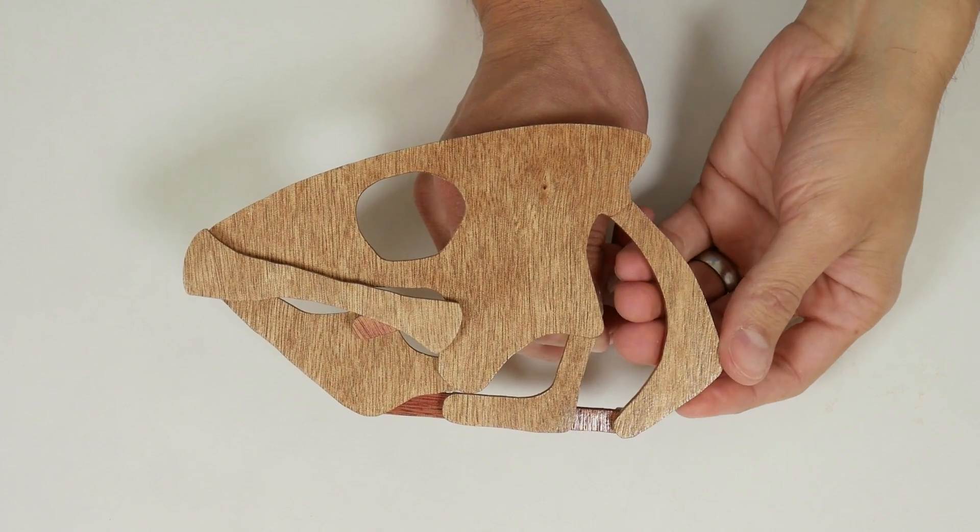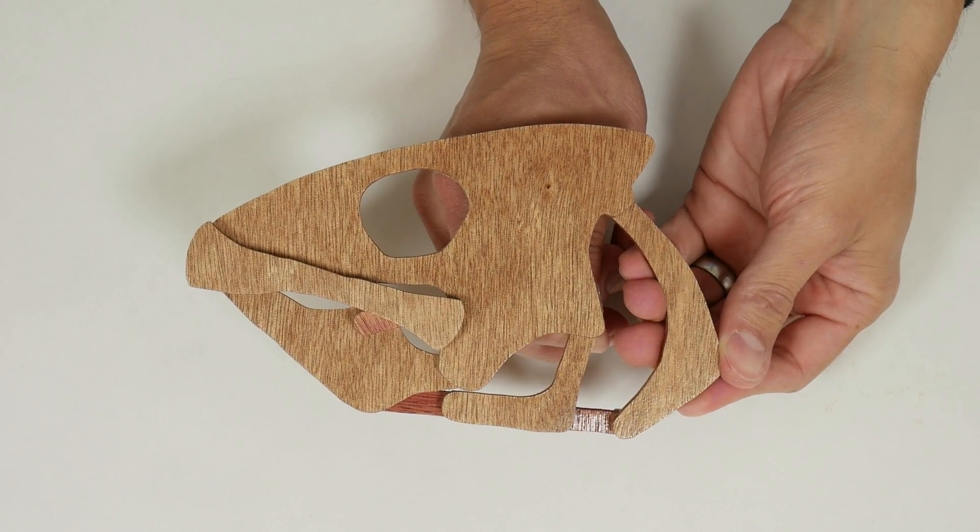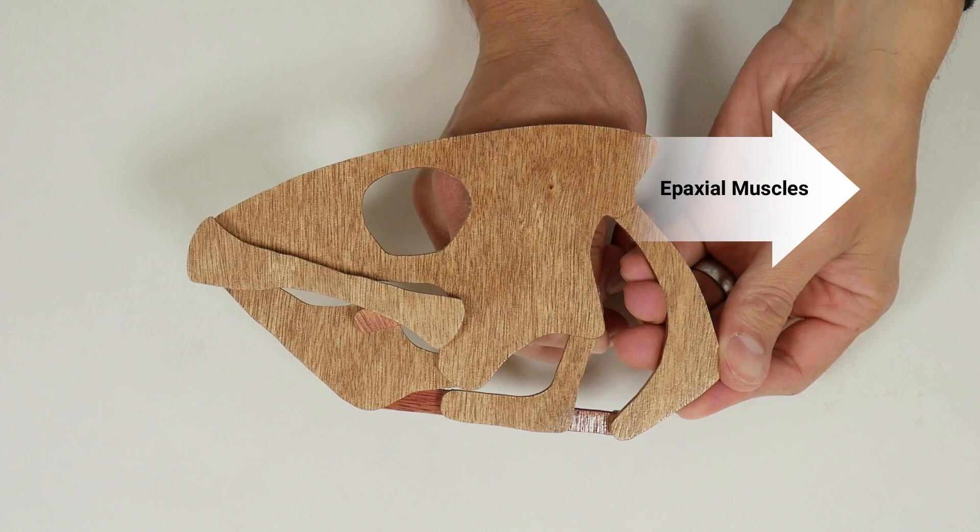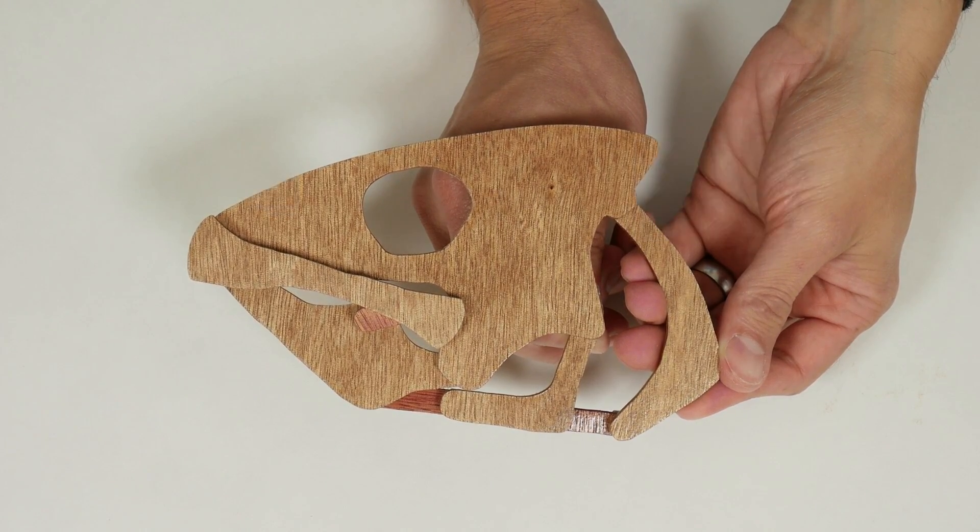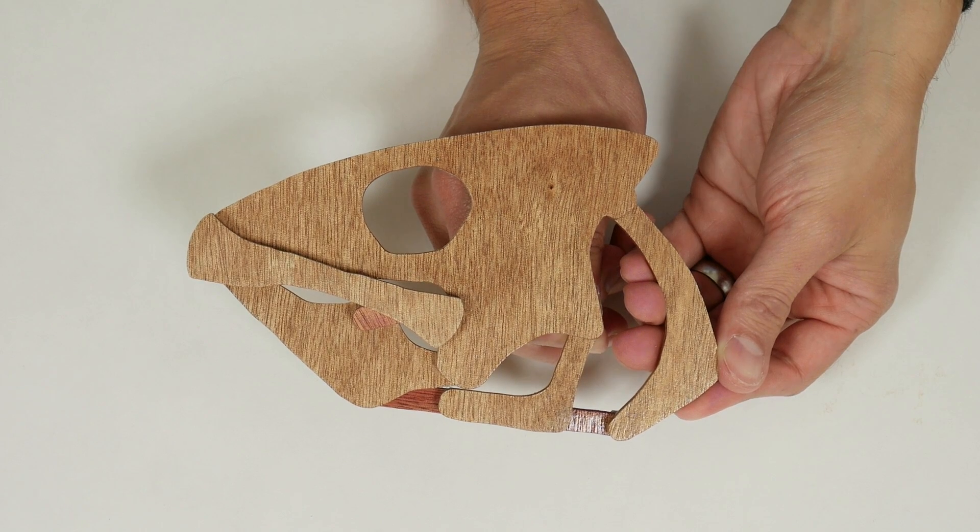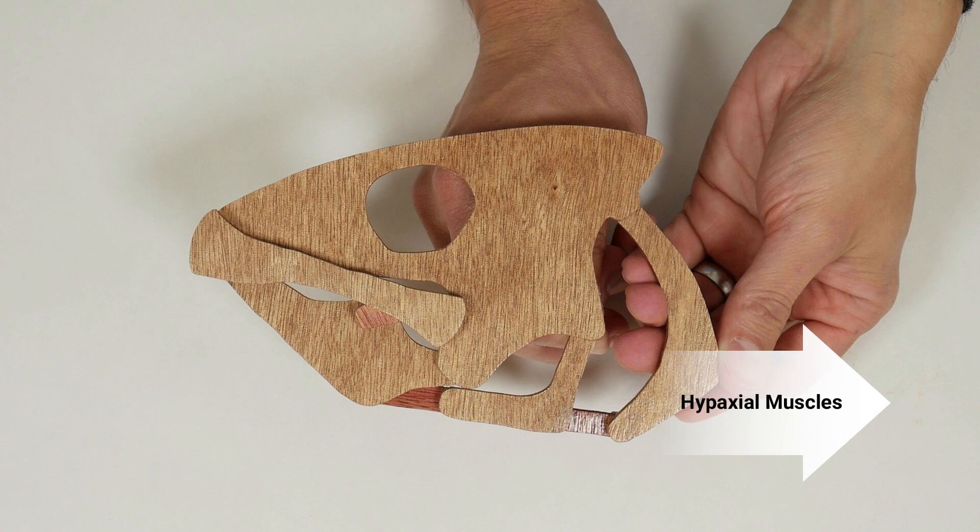Okay so this is how the jaw opens. The epaxial muscles which are on the top or dorsal side of the fish contract and lift the neurocranium. Simultaneously the hypaxial muscles which are on the bottom or ventral side of the fish along with the sternohyoideus and geniohyoideus muscles contract and cause depression of the hyoid and downward rotation of the lower jaw.